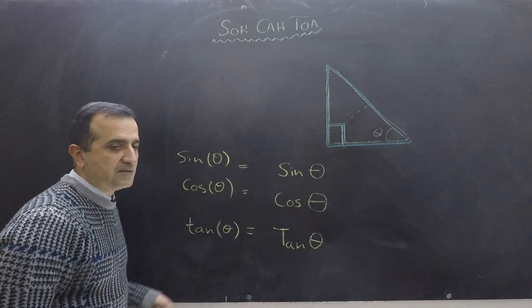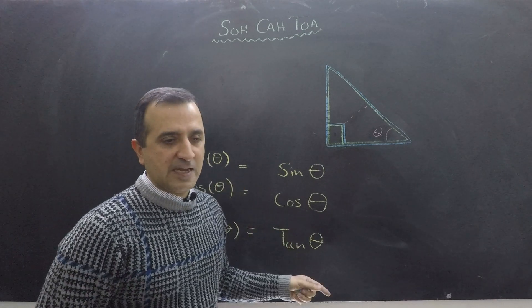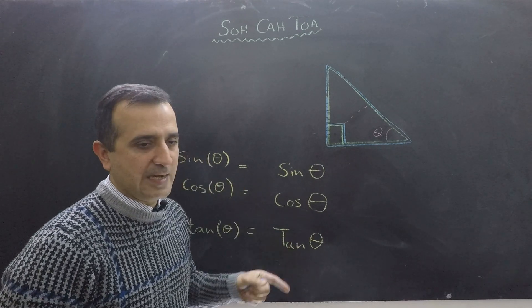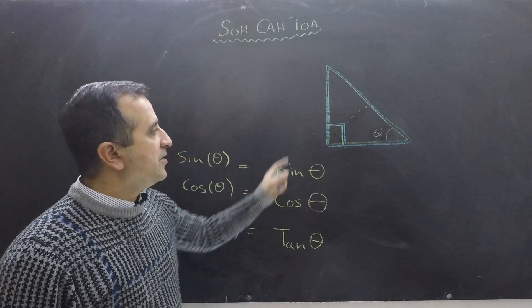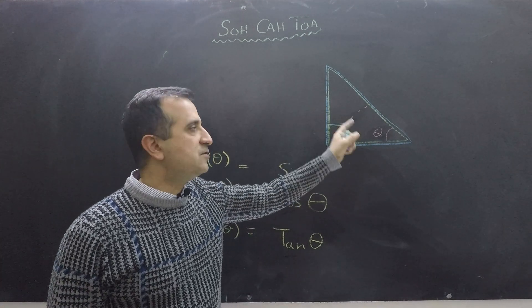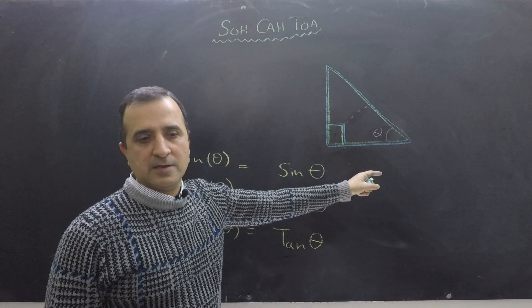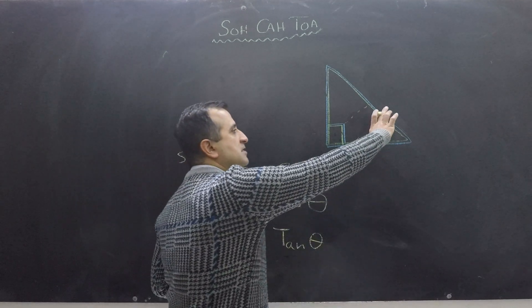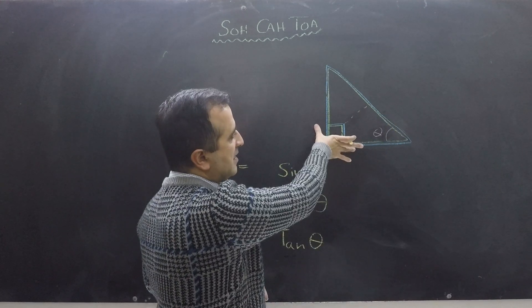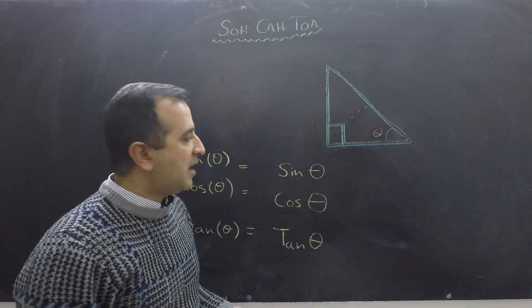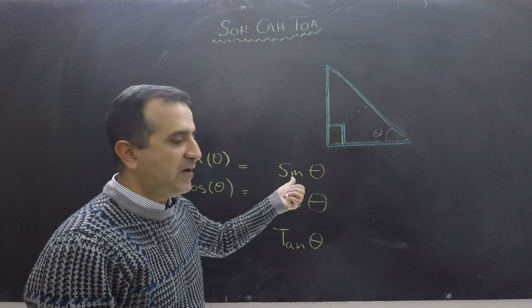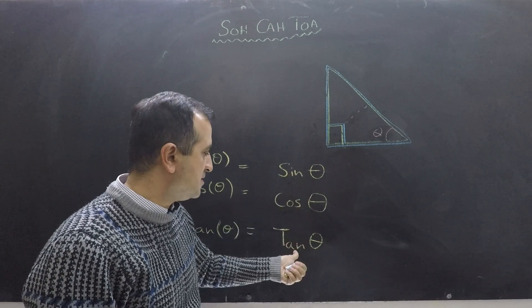So what is sine and what is cos and what is tan? Sine, cosine, and tan are ratios of sides, two sides of this triangle. Some are ratios of this and this side, some are ratio of this and this side, some are ratio of maybe some other two sides. And how to find out that sine is ratio of what and cos is ratio of what and tan is ratio of what?